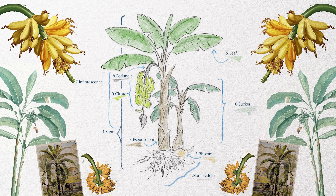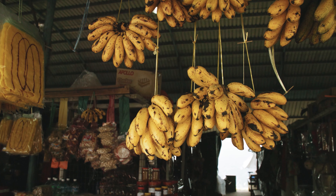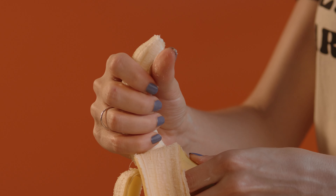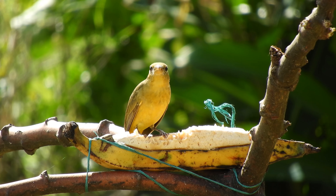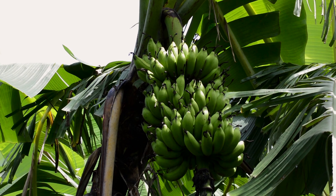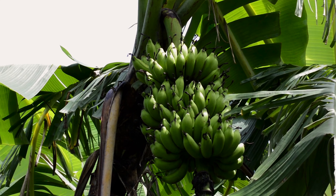All the above-ground parts of a banana plant grow from a structure called a corm. Plants are normally tall and fairly sturdy with a tree-like appearance, but what appears to be a trunk is actually a pseudo stem composed of multiple leaf stalks. In some countries cooking bananas are called plantains, distinguishing them from dessert bananas. The fruit is variable in size, colour and firmness but is usually elongated and curved with soft flesh rich in starch, covered with a peel which may have a variety of colours when ripe. It grows in upward clusters near the top of the plant.